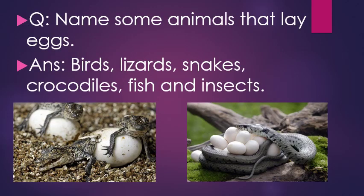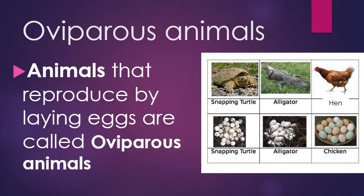Now it's question time. Name some animals that lay eggs. Answer: birds, lizards, snakes, crocodiles, fish, and insects — they all lay eggs for their reproduction. Animals that reproduce by laying eggs are called oviparous animals. So oviparous animals are those that reproduce by laying eggs.